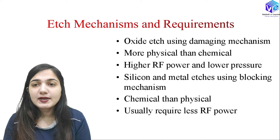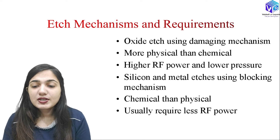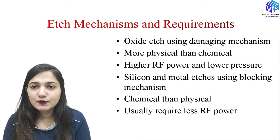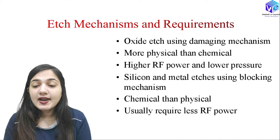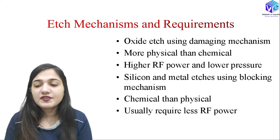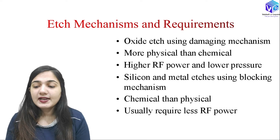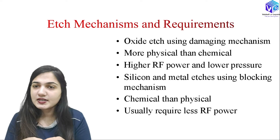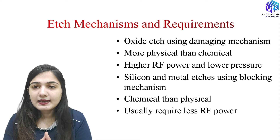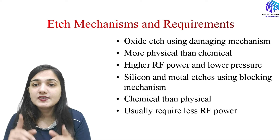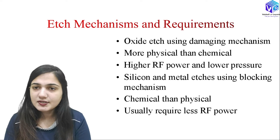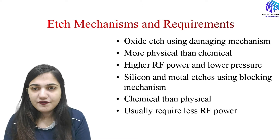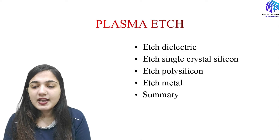Now coming to the etch mechanism and requirements. For oxide etch — if I want to etch silicon dioxide — I use the damaging mechanism, which uses more physical reaction than chemical. This requires higher RF power and lower pressure. For silicon and metal etches, I use the blocking mechanism, which is used when making STI layers or deep trench isolations. This uses more chemical reaction than physical, and requires less RF power.